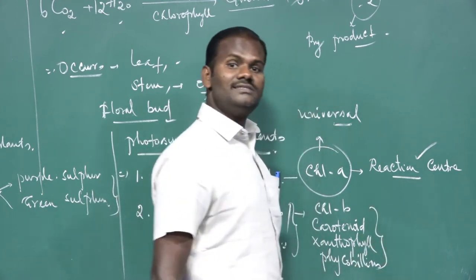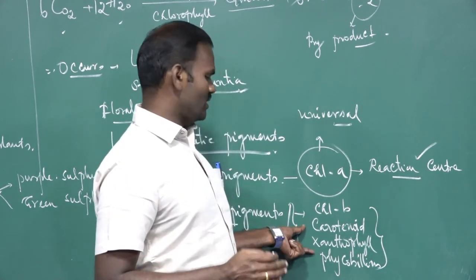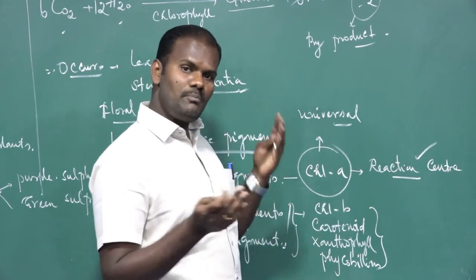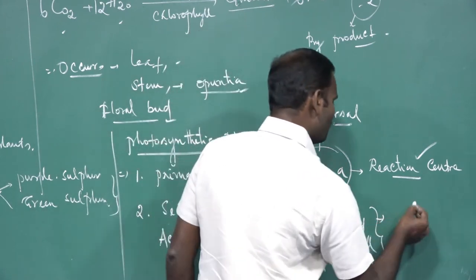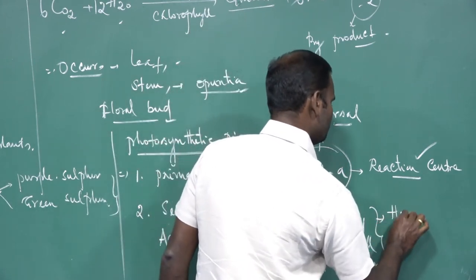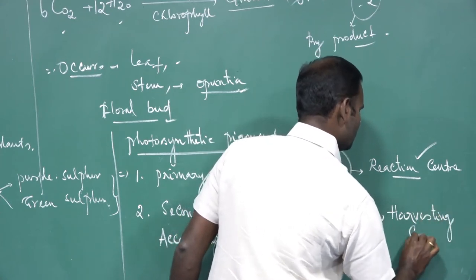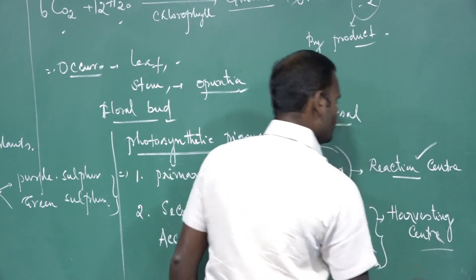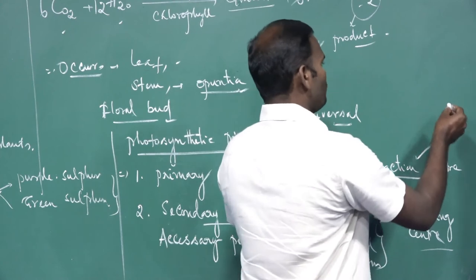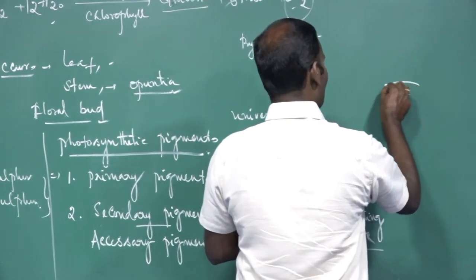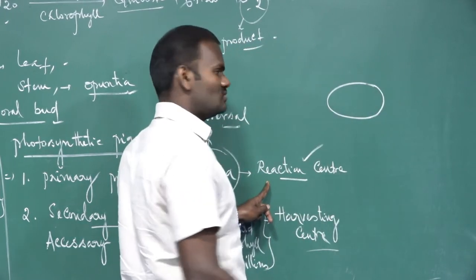These are called accessory pigments or secondary pigments. What are the functions of these accessory pigments? They pass the absorbed solar energy into chlorophyll A. So these are called harvesting centers — or light harvesting centers. One is called the reaction center and the other the harvesting center. All the photosynthetic pigments aggregate to perform photosynthetic activities.